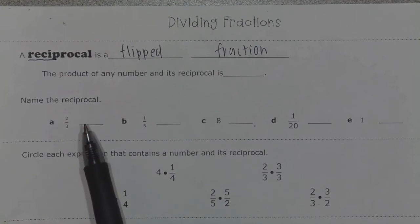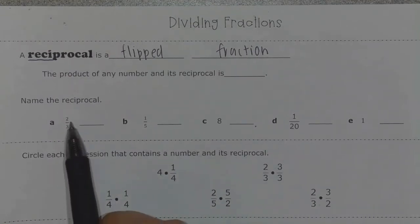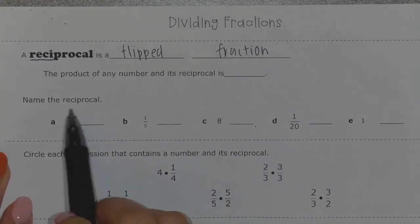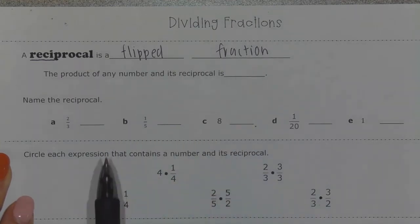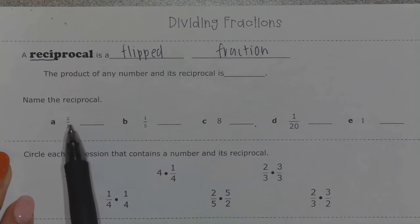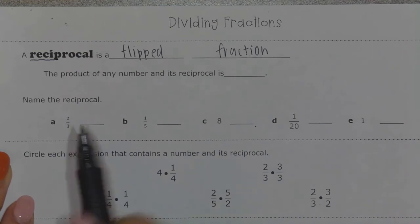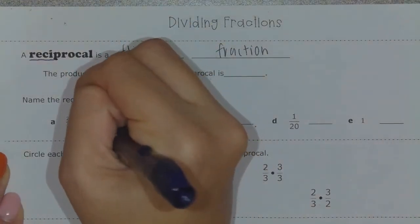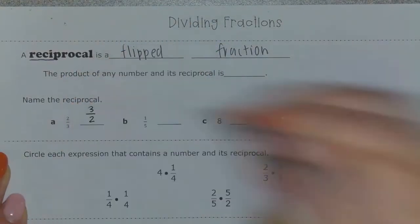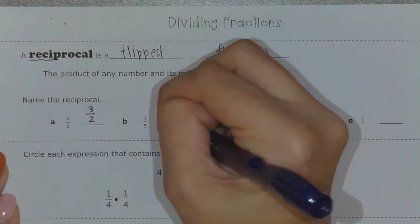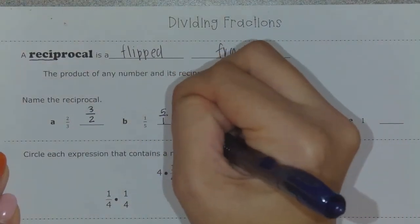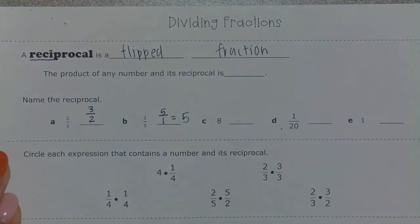When it says name the reciprocal — I have the fraction two-thirds. A reciprocal is just a flipped fraction, so I'm going to flip the numerator and the denominator. So instead of two-thirds, the reciprocal would be three-halves. The reciprocal of one-fifth would be five over one, which is just simply the number five.